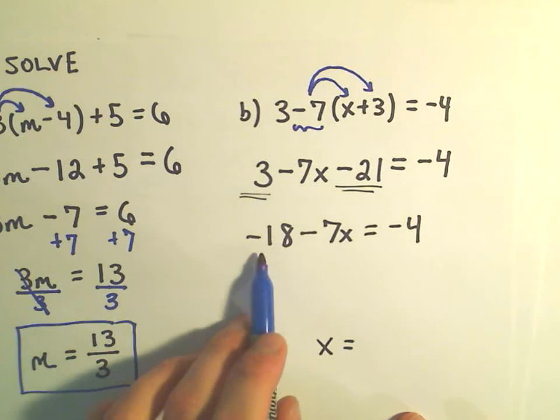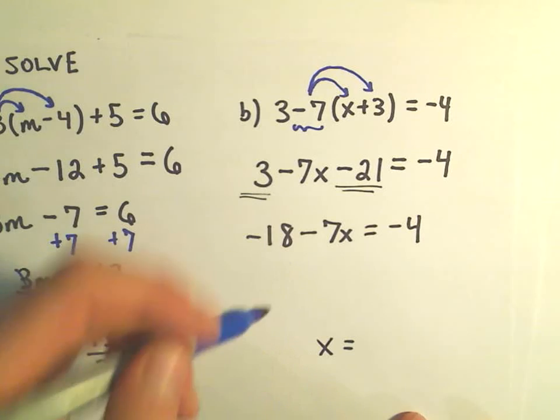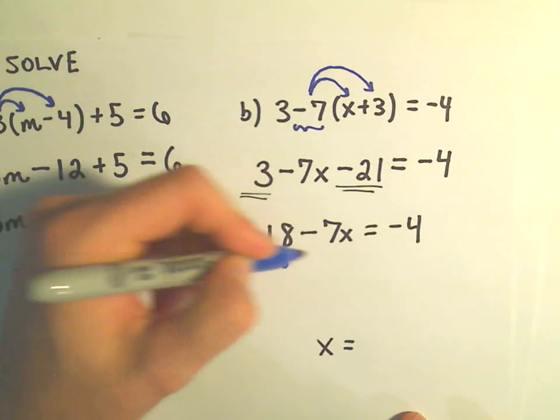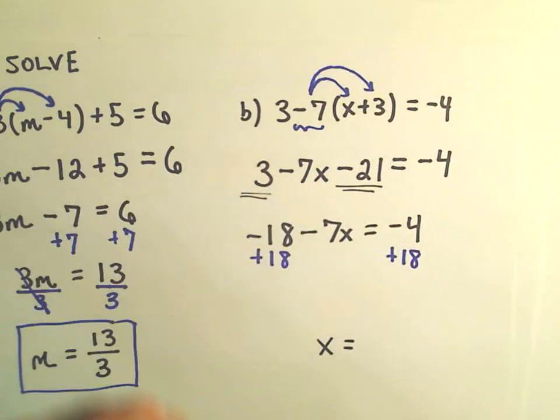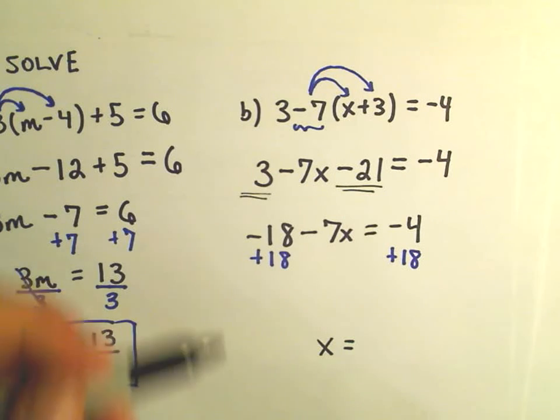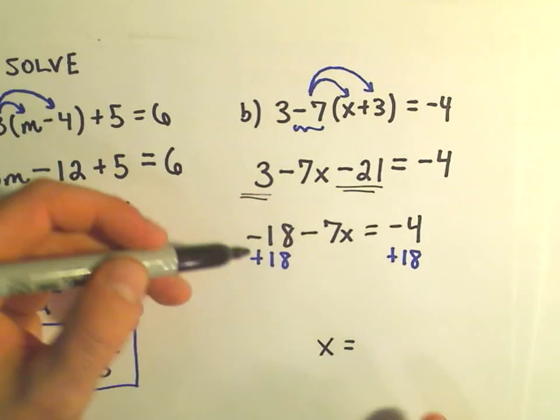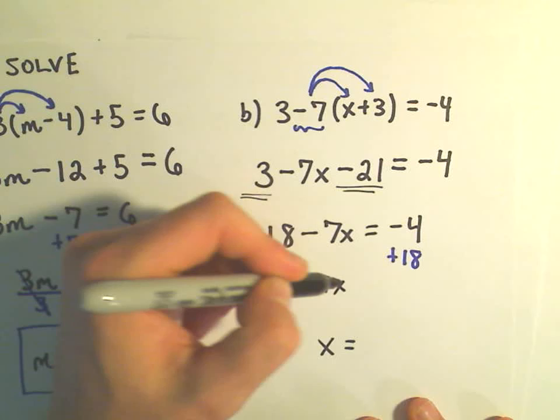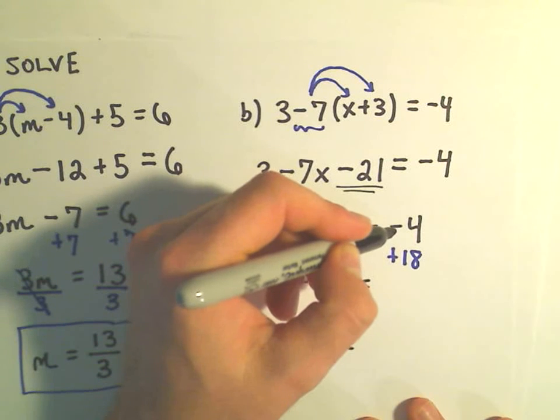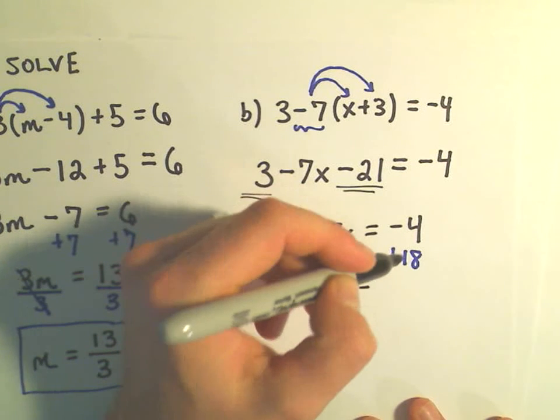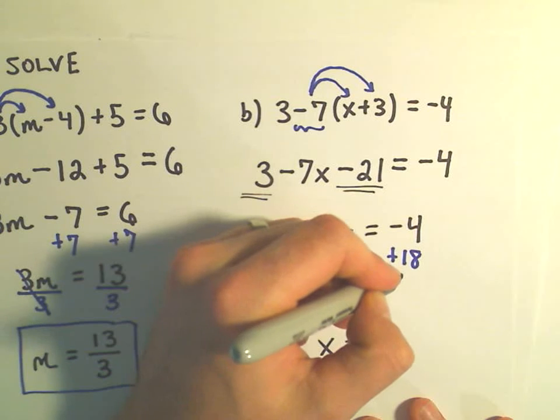So, since we have a negative 18, to get rid of that term, I'm simply going to add 18 to both sides. So I've got negative 7x equals, okay, so negative 4 plus 18 is going to be positive 14.